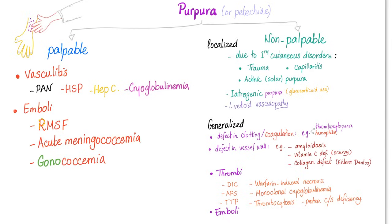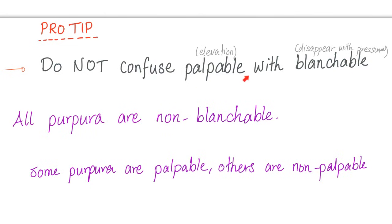Non-palpable purpura is seen in localized cutaneous disorders and generalized conditions due to clotting or coagulation problems — so thrombocytopenia and ITP present with non-palpable purpura. Do not confuse palpable with blanchable. Palpable means it is elevated off the surface of the skin. Blanchable means it disappears with pressure. All purpura are non-blanchable — they do not disappear with pressure. Some purpura are palpable, others are non-palpable.